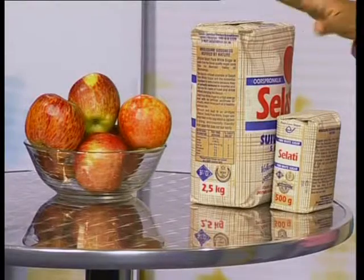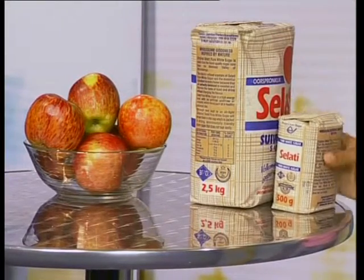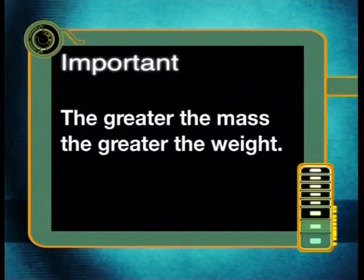Thanks Erin. Now that we recognize that the terms mass and weight are different, let's think about how they relate to each other. Have a look at these two packets of sugar. This one has a mass of 0.5 kilograms, while the second one has a mass of 2.5 kilograms. If I hold the first packet of sugar out in front of me, I can feel the gravitational force of the earth pulling this sugar downwards. Clearly the object with a greater mass has a stronger force pulling it downwards. This force is in fact the weight of the sugar. So the weight of an object is directly related to its mass. The greater the mass, the greater the weight.